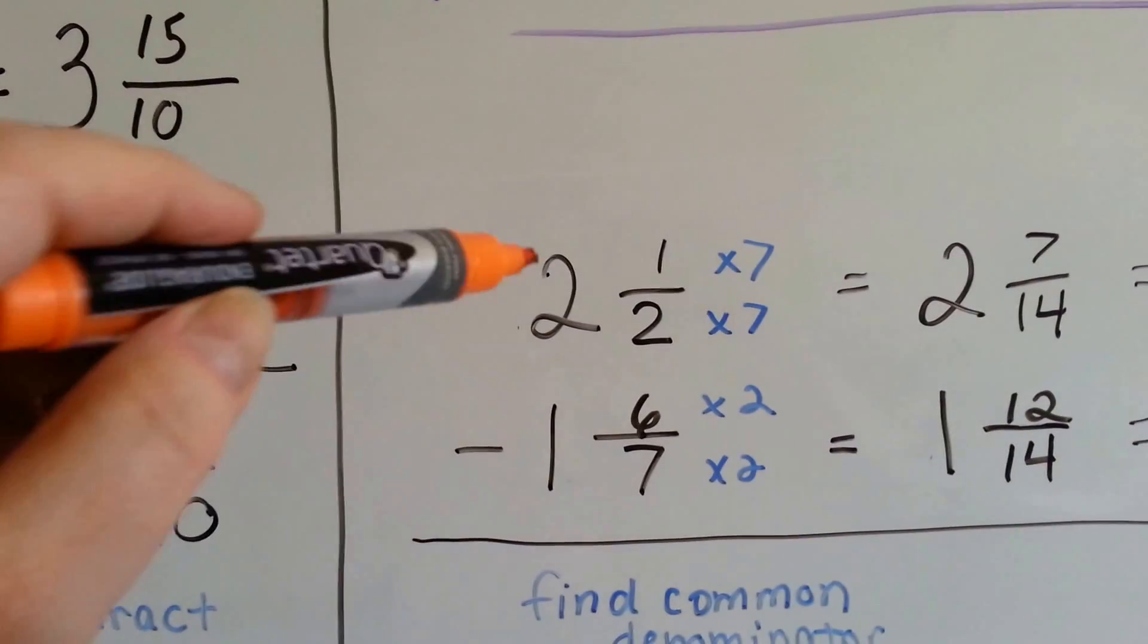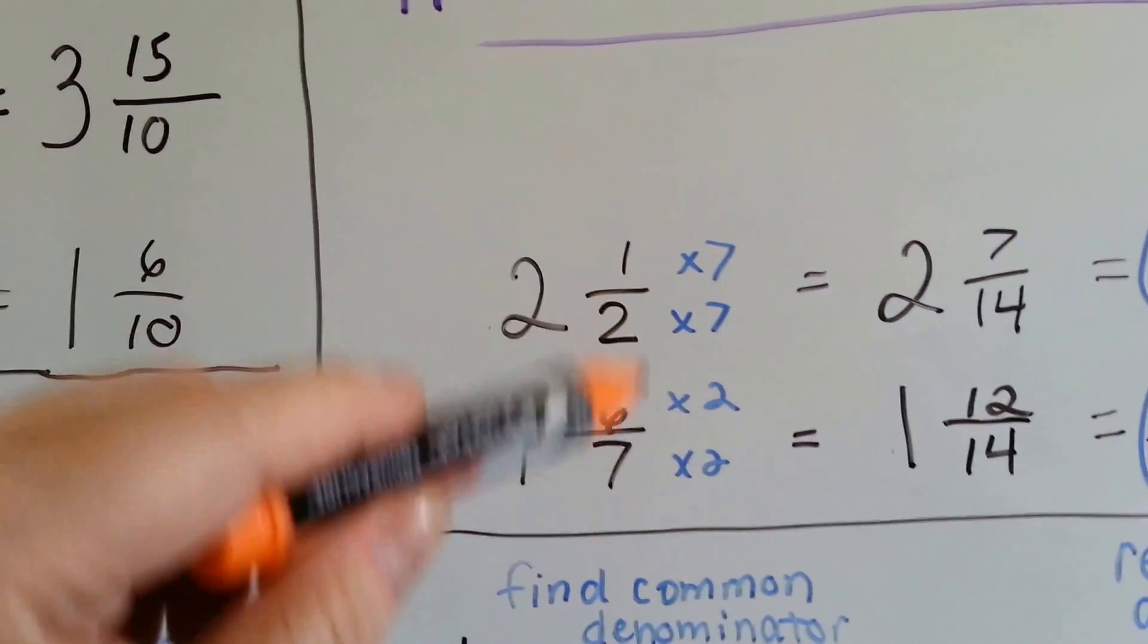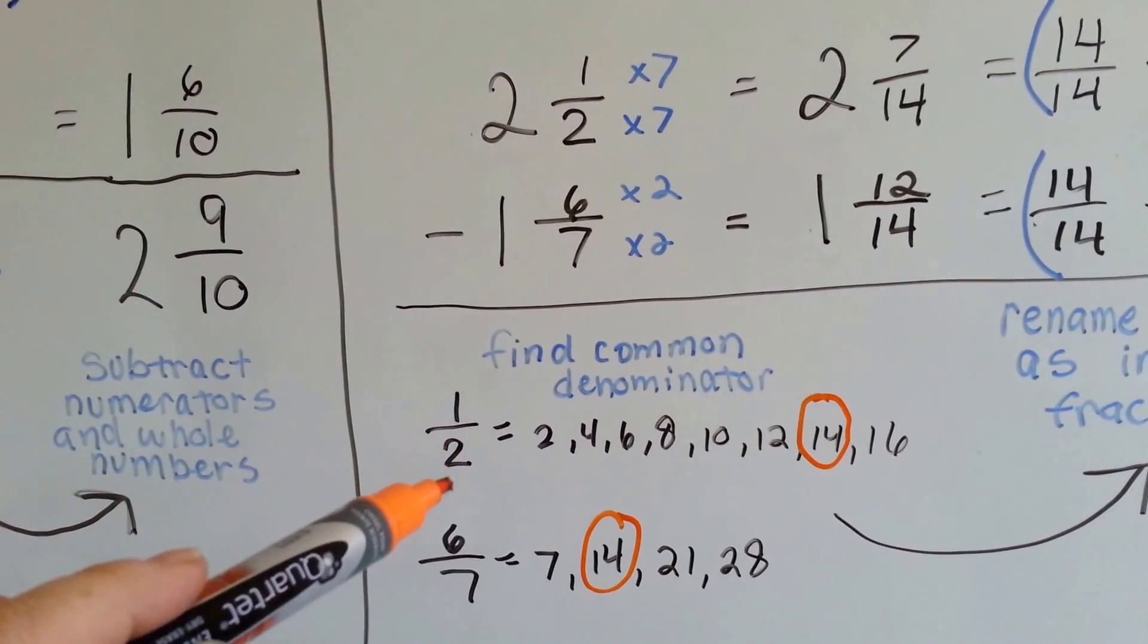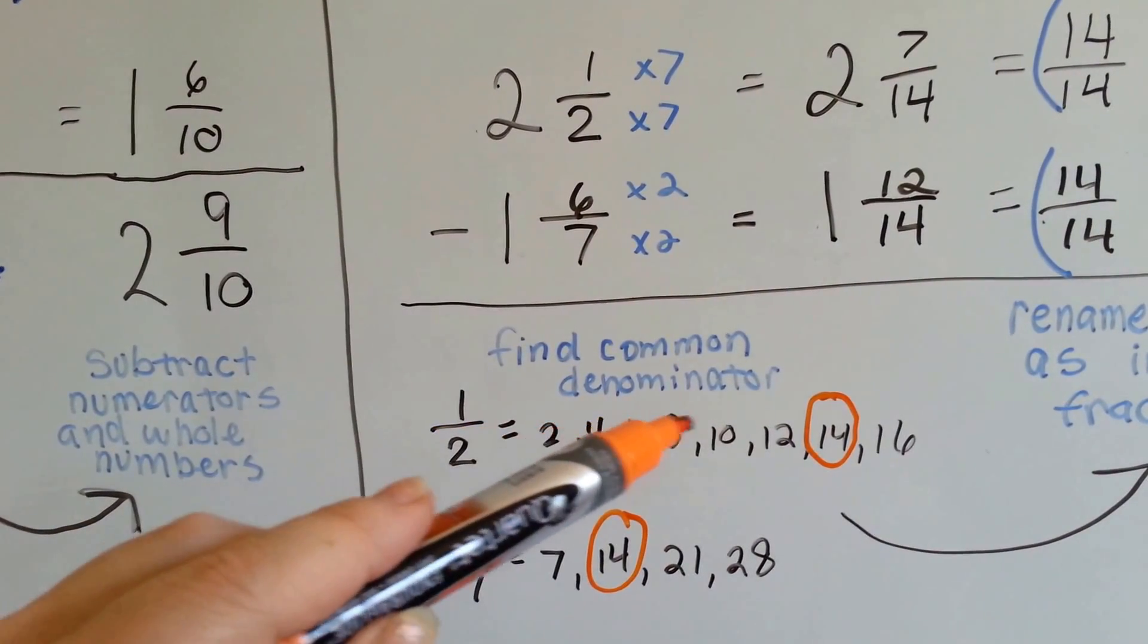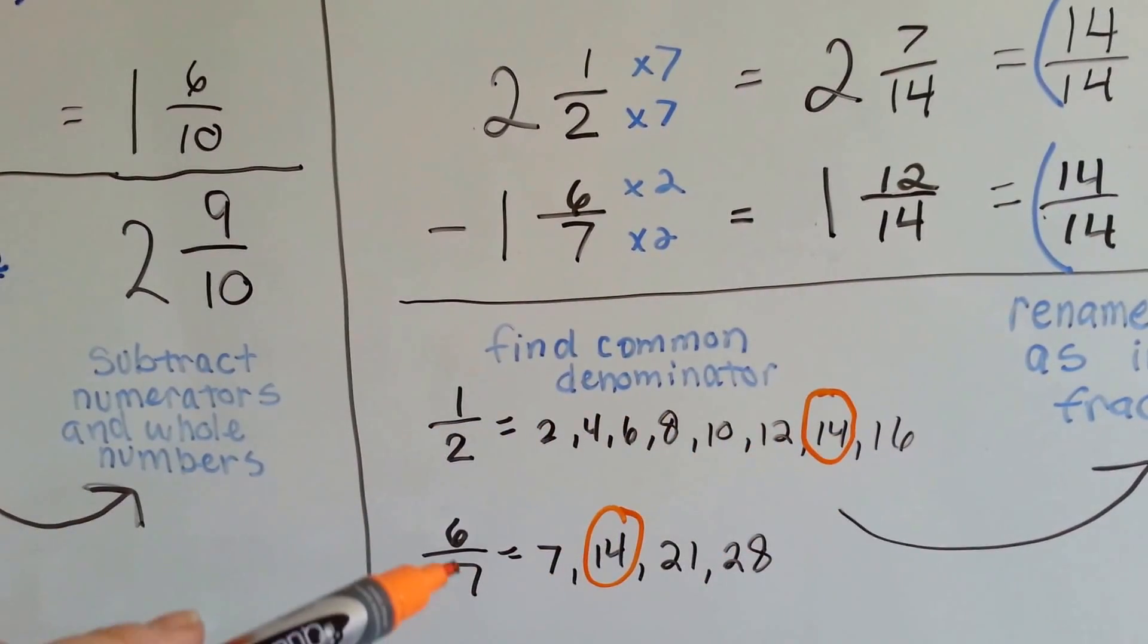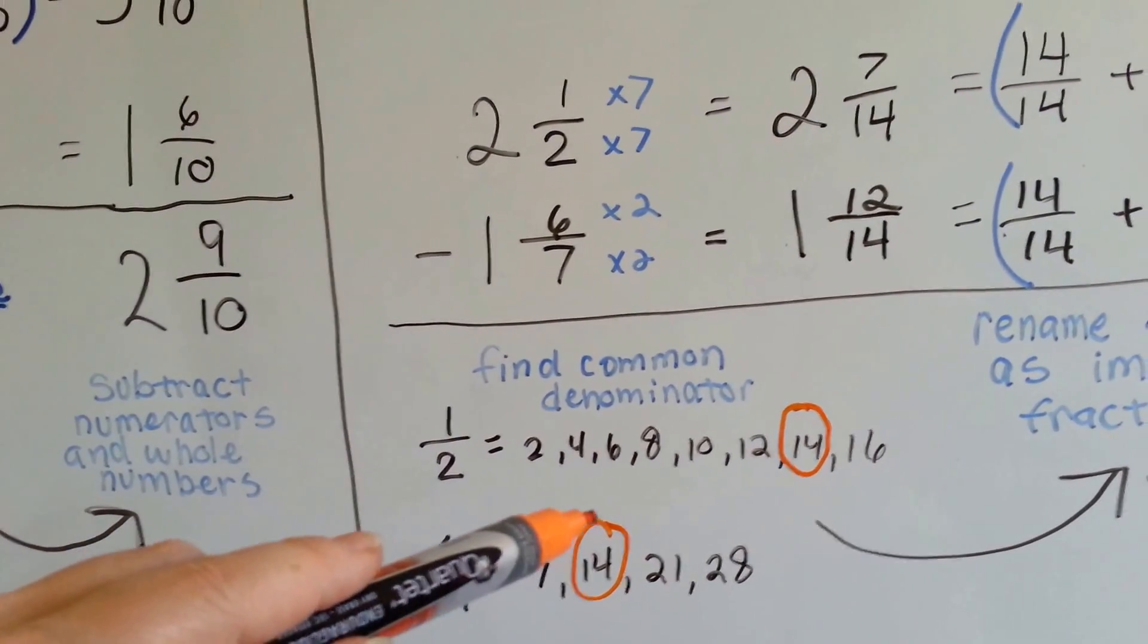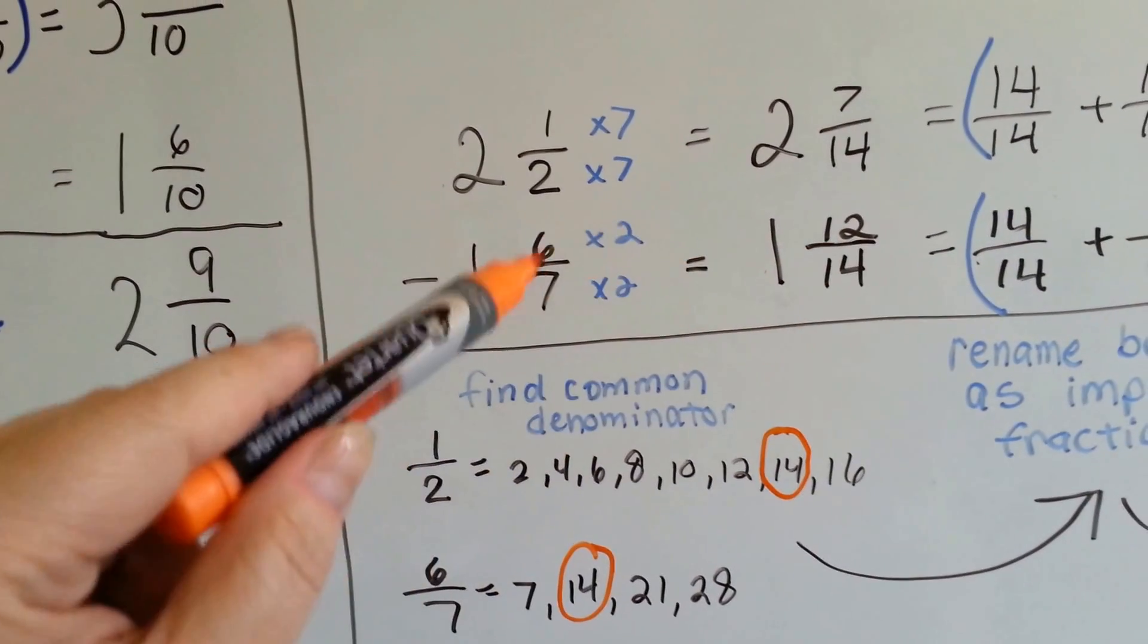When we have the problem 2 and a half minus 1 and 6 sevenths, we need to find a common denominator. So we make a list of their multiples. For the 2, it's 2, 4, 6, 8, 10, 12, 14, 16. For the 7, it's 7, 14, 21. And we already see that the 14 matches, so we stop. We're going to have them meet at 14's house.